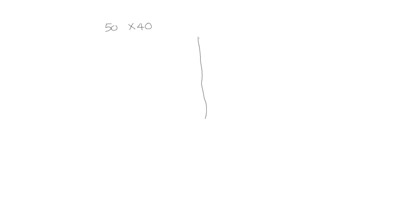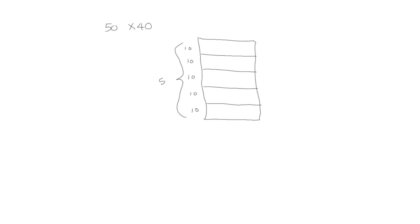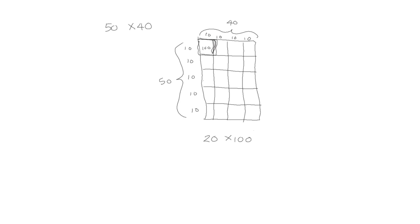Let's try 50 times 40. Again, let's show it in an area model. We have 5 tens going this way — that's 50. And here we have 4 tens, which is 40. Each of the individual squares in our area model is 10 times 10, which is 100. If we count all of our squares, we see we have 20 times 100. Each square is 100 and there are 20 of them, so we have 20 hundreds, or 2,000.